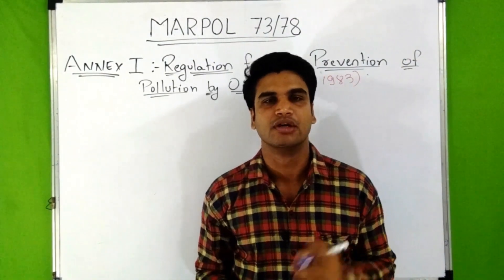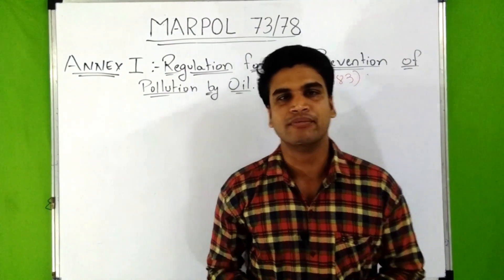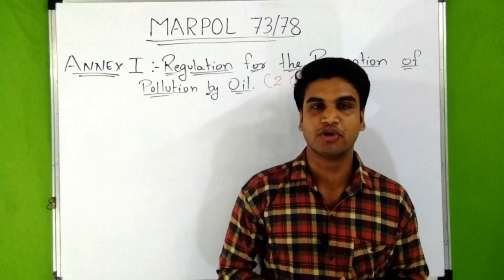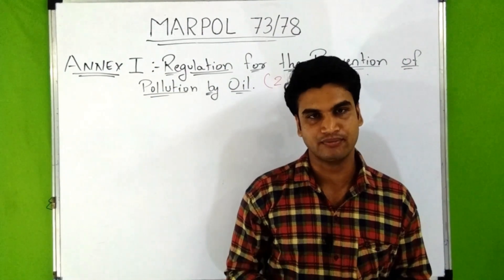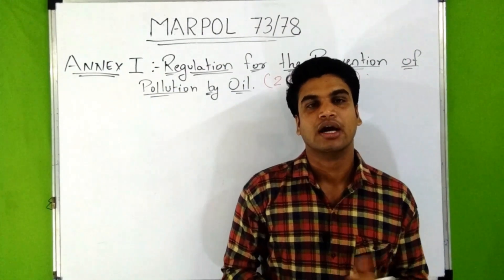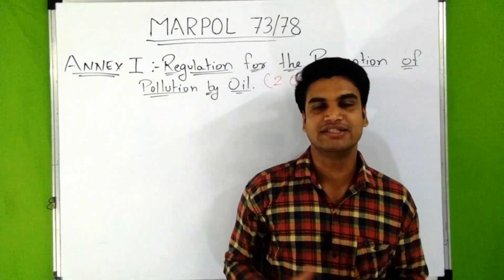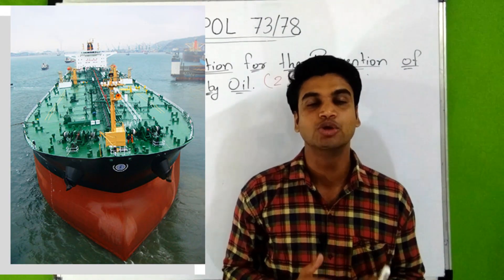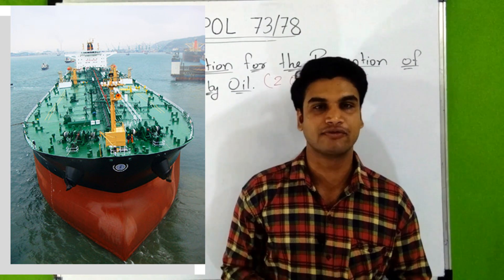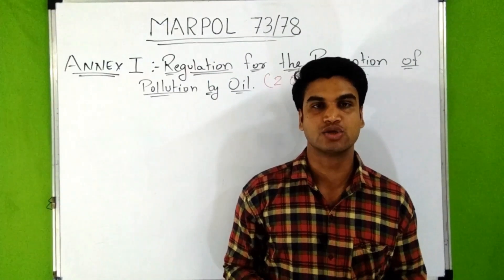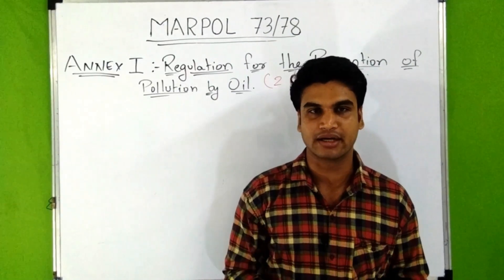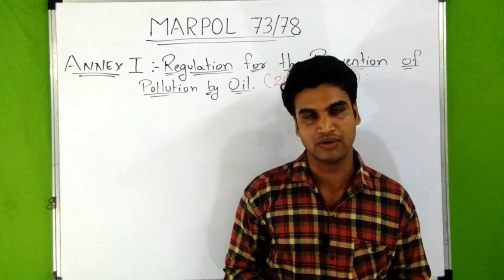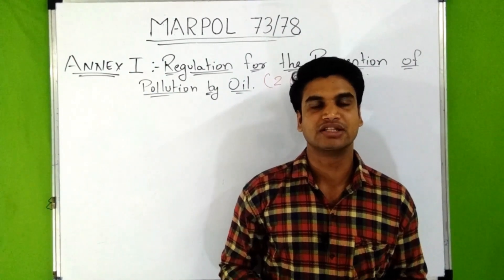Why is oil pollution a major concern in the marine environment? About 2 billion tons of crude oil is transported by ships all around the world. A single VLCC tanker can carry about 1.9 to 2.2 million barrels of crude oil, while a ULCC tanker can carry about 4 million barrels.